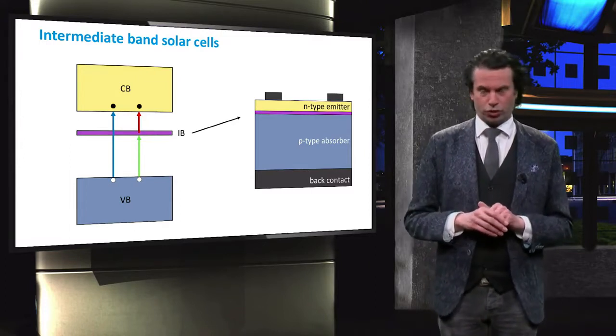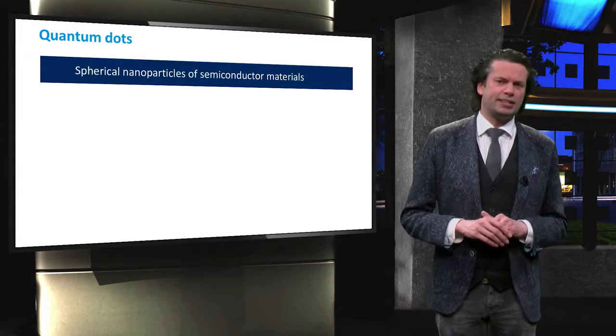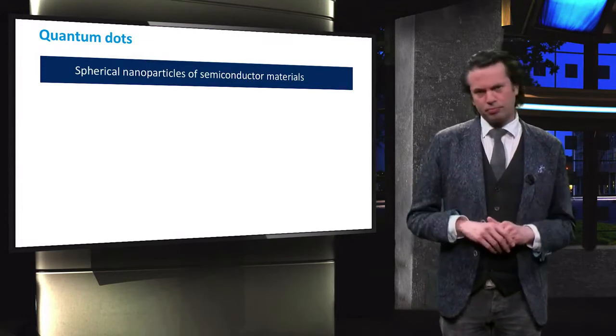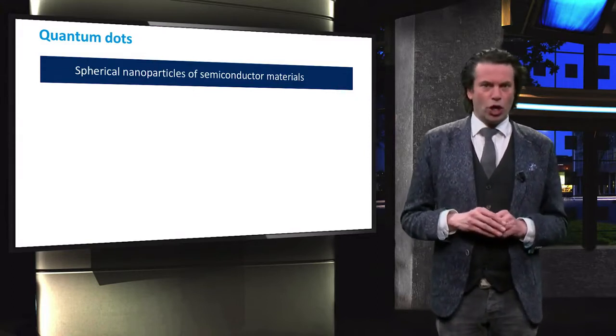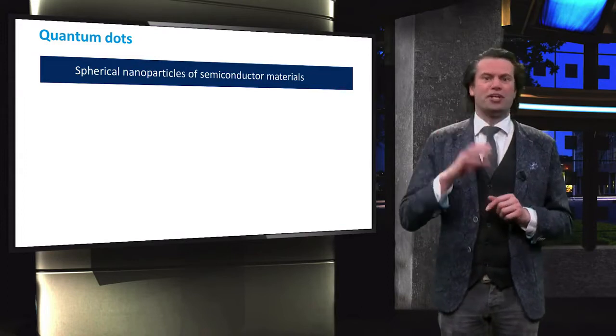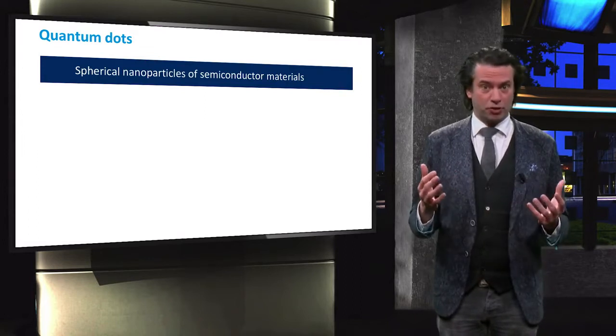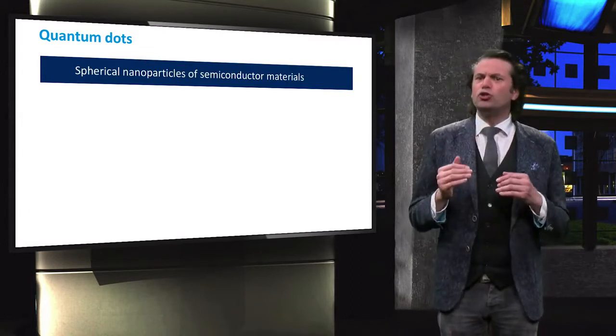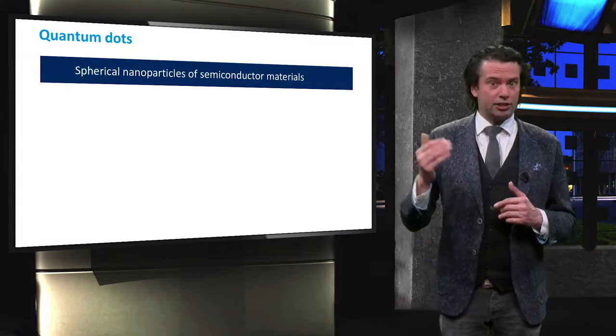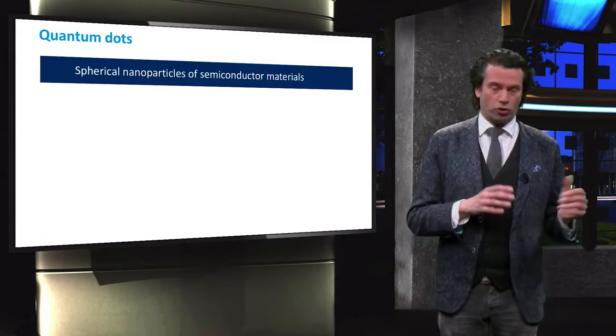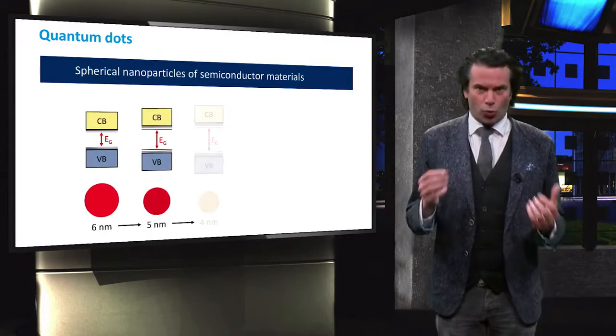One possibility that is under investigation for realizing intermediate band states is to use so-called quantum dots. These are small spherical nanoparticles made of semiconductor materials with typical diameters of only a few nanometers. These semiconductor particles still behave like a semiconductor material. However, due to the so-called quantum confinement, the bandgap of the semiconductor quantum dots can be larger than that of the semiconductor in a bulk configuration.